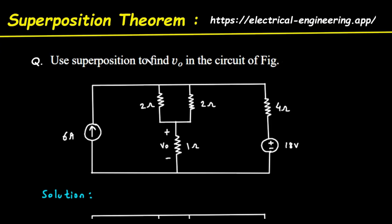First, let's take a close look at our circuit. On the left, we have a current source, indicated by a circle with an arrow inside. This source is pushing a constant current of 6 amperes into the circuit. In the middle, we have a network of resistors — two 2-ohm resistors connected in parallel. Below them, connected in series, is a 1-ohm resistor. This 1-ohm resistor is special because it's where we need to find our target voltage, V0.